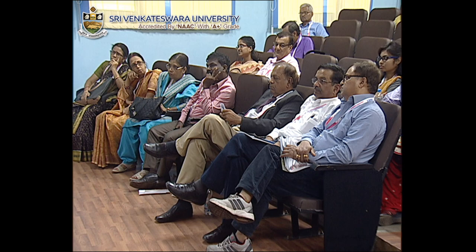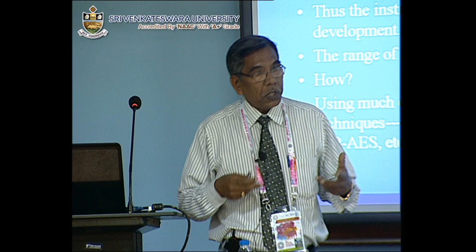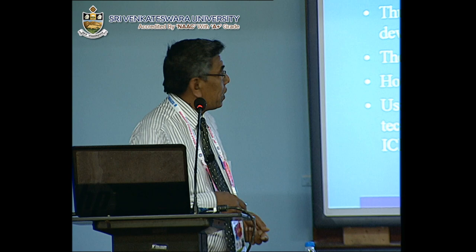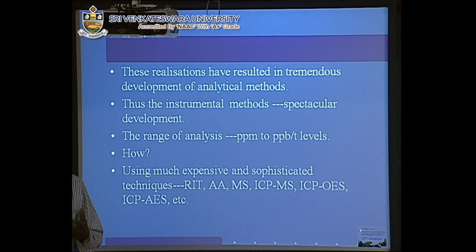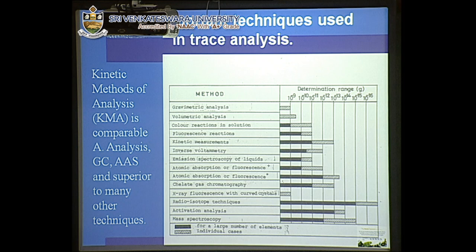The range of analysis has been extended from PPM to PPB to PPT level. But the question is: how do we use cost-effective techniques we can develop in a very simple way? Not by using expensive and sophisticated instruments like radioisotope technique, activation analysis, mass spectrometry, ICP-MS, ICP-OES, and ICP-AES — these are all quite costly. Kinetic method of analysis is comparable to activation analysis and gas chromatography and atomic absorption spectroscopy, and superior to many.